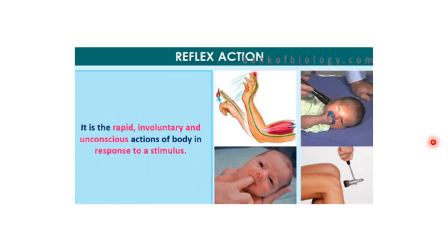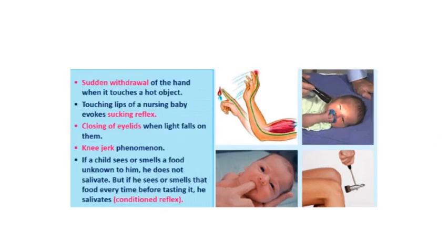Now let us understand reflex action. Reflex action is a simple, rapid, involuntary, unconscious action of a body in response to a stimulus. It happens immediately and our brain is not really aware of it when it is happening. Examples include withdrawal of the hand when it touches a hot object, the sucking reflex invoked when the lips of a nursing baby are touched, closing of eyelids when light falls on them, and the knee jerk phenomenon. If a child sees or smells food unknown to him, he does not salivate. But if he sees or smells that food every time before tasting it, he salivates — this is an example of conditioned reflex, because the child has conditioned his body in such a manner.